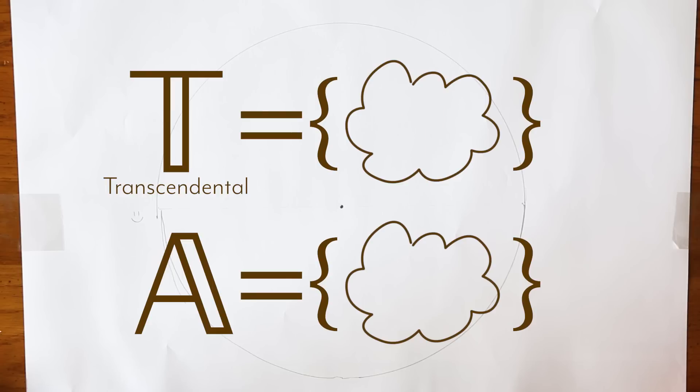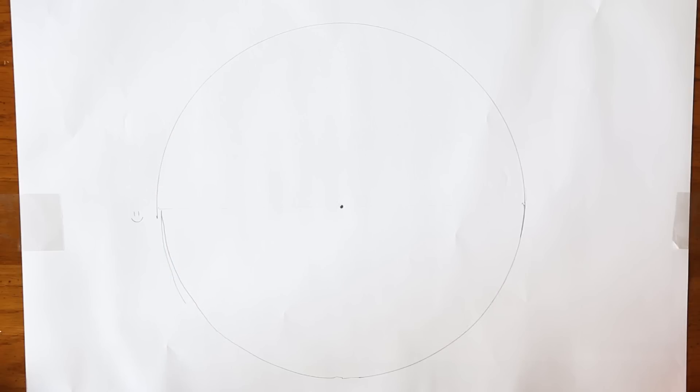That puts it in its own class of numbers called transcendentals. The set definition is more or less a contrast with the algebraic numbers. That is, if it's not algebraic, it's transcendental. Now, if you've been paying very close attention, you can tell that there's a problem here, and this is where I have to put the ruler down and have a heart-to-heart with you.